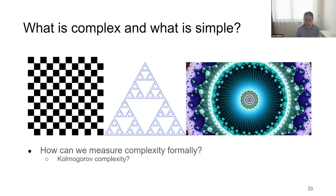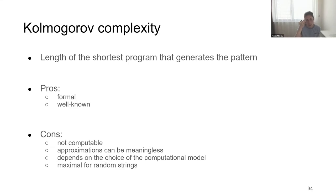There are still basic unsolved problems, like: what is a mathematical formulation of complexity, and how can we measure it? Looking at three pictures, intuitively we'd say the one on the right is most complex because it has the most patterns and colors. But if you think of minimum description length, many complex-looking patterns are generated from short computer programs and so don't have much complexity from that point of view.